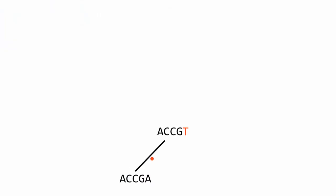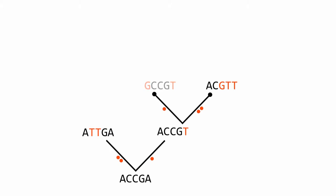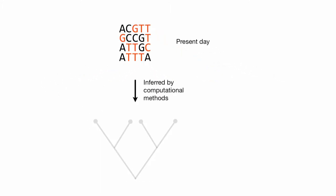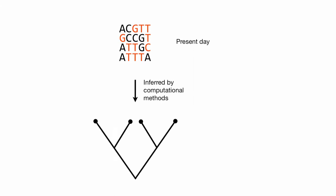Imagine a DNA sequence inside a population of ancestral organisms. As this population splits and resplits, forming new species, the DNA inside will acquire mutations, resulting in a present-day set of related but different sequences. Using computational methods, it's possible to go back inferring the underlying history from these sequences alone.